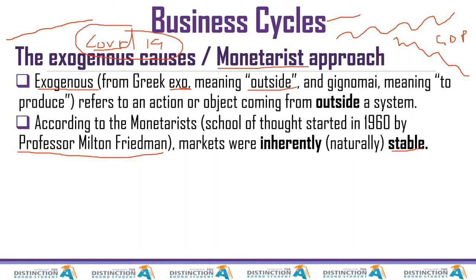COVID-19 causes a downward movement — it causes GDP to go down because people are in a lockdown and cannot buy goods and services as much as they did. Businesses are forced to close. As I'm doing this video, we are on level three here in South Africa. Clubs are closed, betting is closed, there are so many businesses still closed. GDP for South Africa was severely affected, and that was caused by an exogenous factor, which is COVID-19. So yes, the monetarists were right.